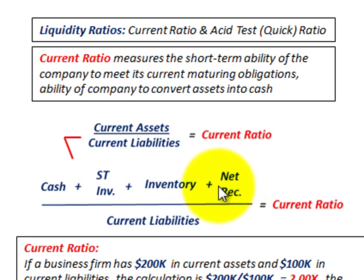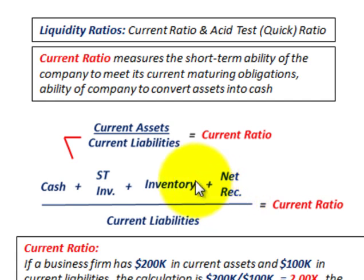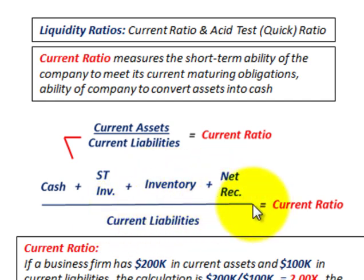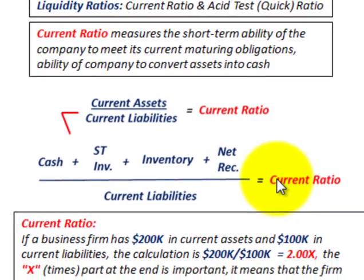We wouldn't include any allowances — allowances would be removed from our receivables. We then divide by our current liabilities. So we need to know what our current assets and current liabilities are; that division gives us our current ratio.